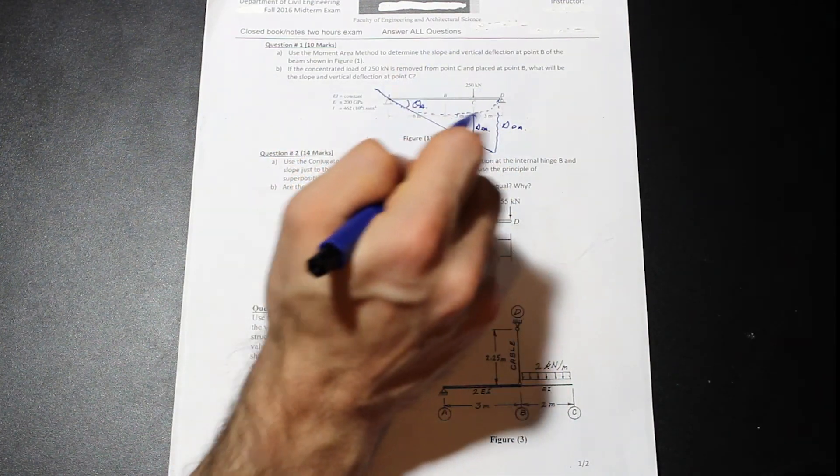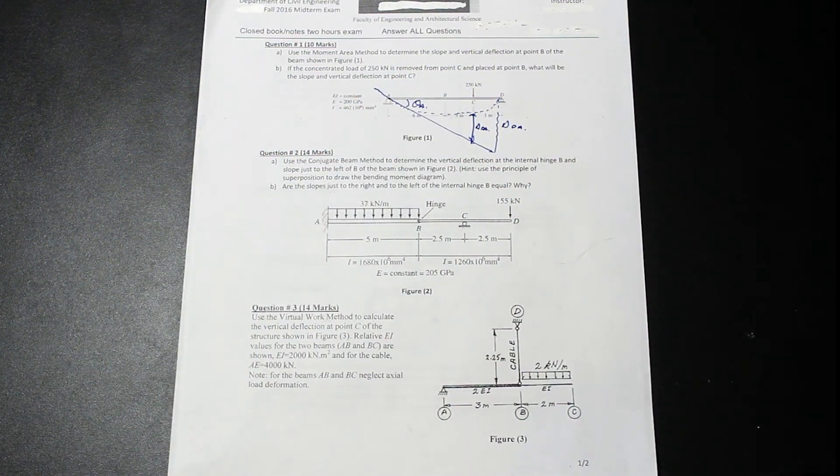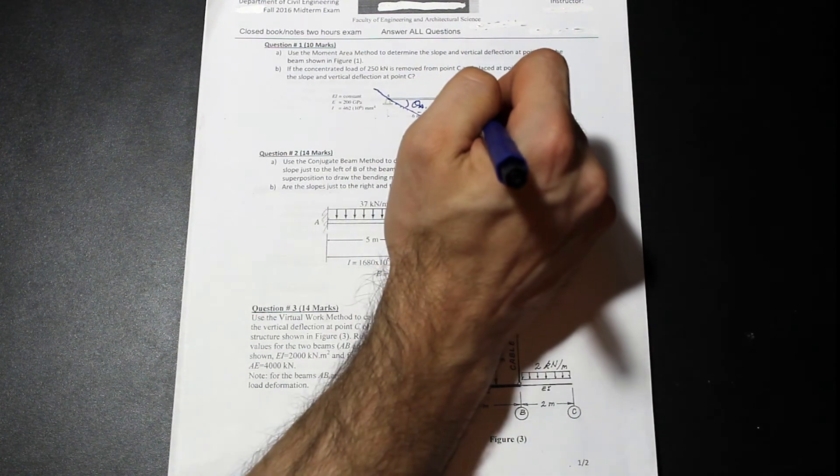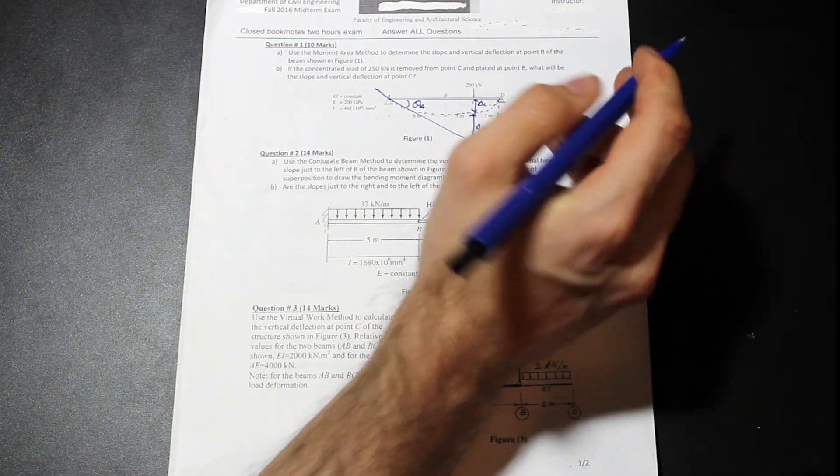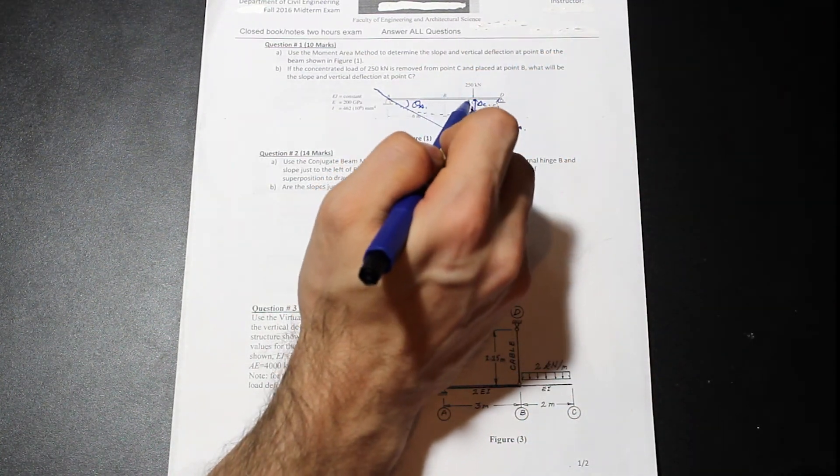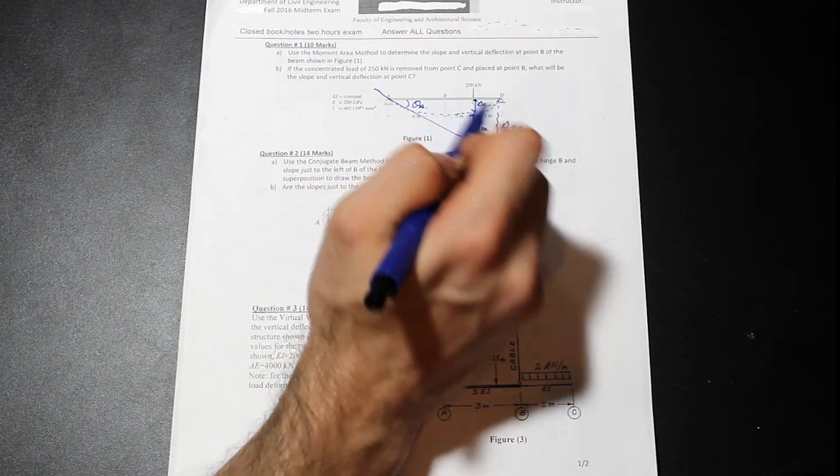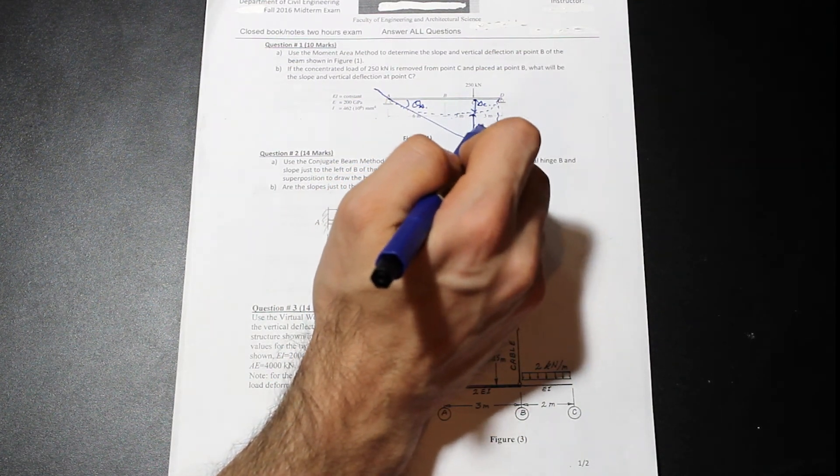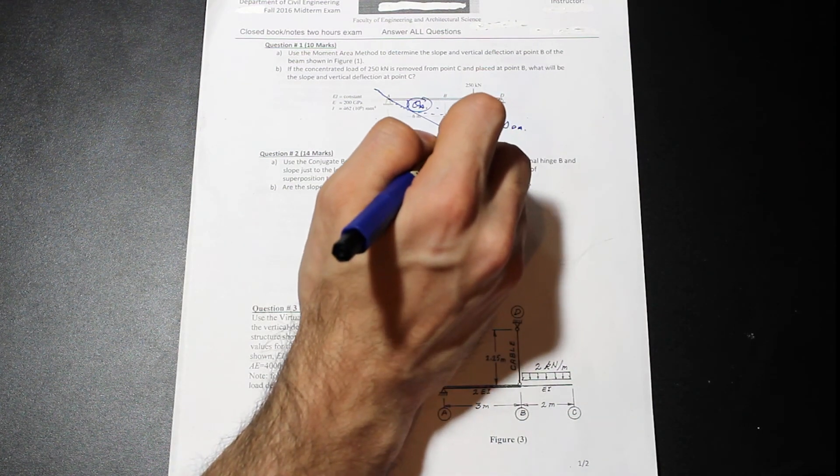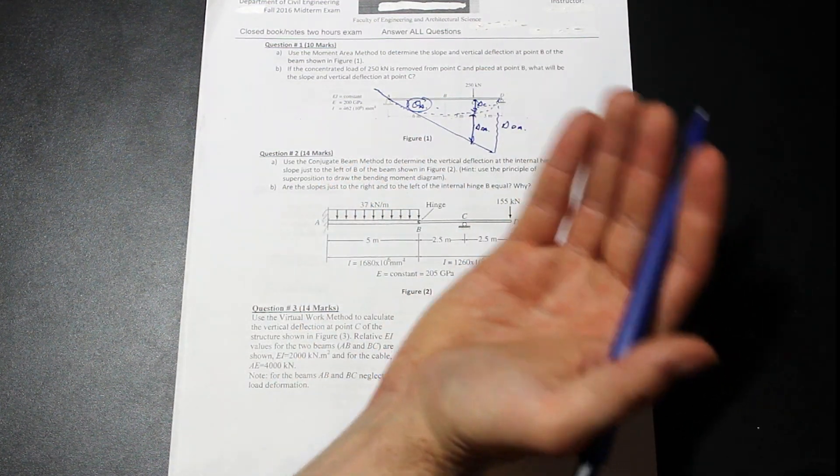And this could be delta DA, for example. We calculate that by finding the area under the M over EI diagram. Essentially, that's just the moment diagram of this beam, divided by EI. And by finding that, we can find, for example, delta C. And if we know the distance from A to C, and we know this quantity delta DA, and we know theta A, we can find the deflection. That's the idea behind the moment area method.